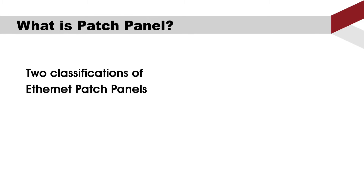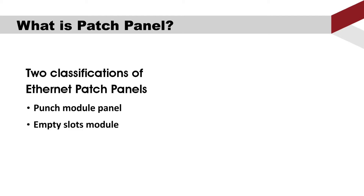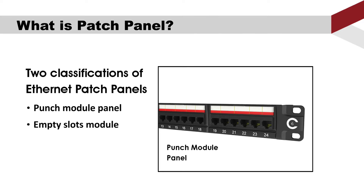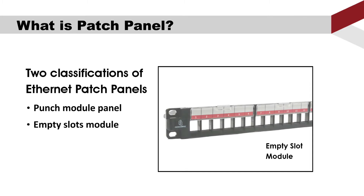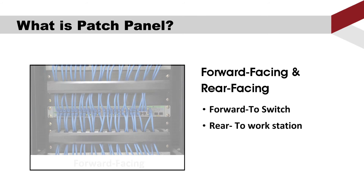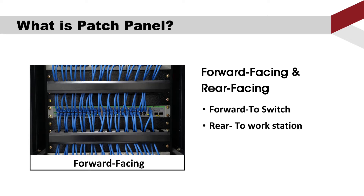There are two classifications of patch panels: one with a punch module, and another with empty slots for modules like keystone jacks, feed-through couplers, or multimedia modules. Today, we will mainly focus on the punch module panel.